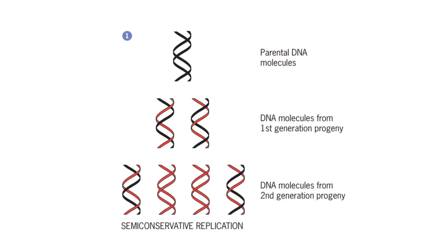In semi-conservative replication, the parental DNA molecule is shown in black in this figure. In the first round of replication, both strands get separated and each forms a copy of itself. In the first generation, we obtain two DNA molecules which consist of half old material and half new material.